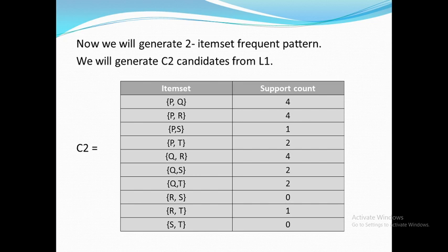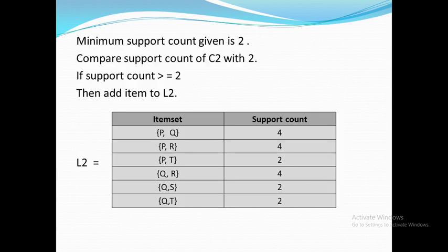Now with the help of C2 we will generate frequent item set list 2, that is L2. Our condition says if an item set's support count is greater than or equal to the minimum support count, then and only then it will be added to L2. The support counts of item sets PS, RS, RT, and ST are less than 2, hence these item sets are rejected and not included in list L2. L2 will contain only PQ, PR, PT, QR, QS, and QT, because their support counts are greater than or equal to 2.